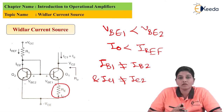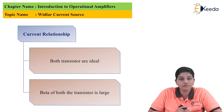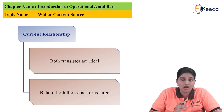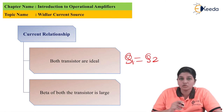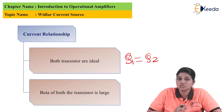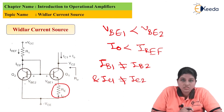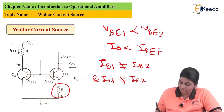Now let's derive the current relationship for the Widlar circuit. For that purpose, we need to consider two assumptions. The first assumption is that both transistors Q1 and Q2 are ideal transistors and have equal characteristics. Also, the beta of both transistors is required to be very large. To derive the current relationship, we apply KVL to the loop which consists of V_BE2, V_BE1, I_E, R_E, and V_EE.